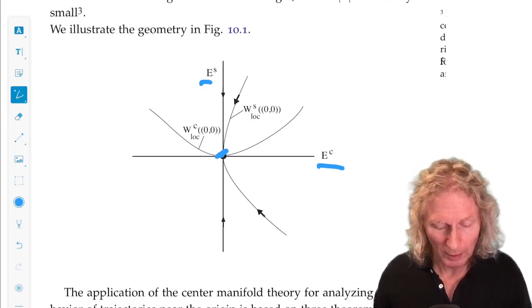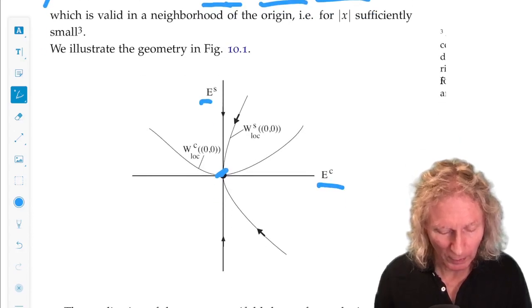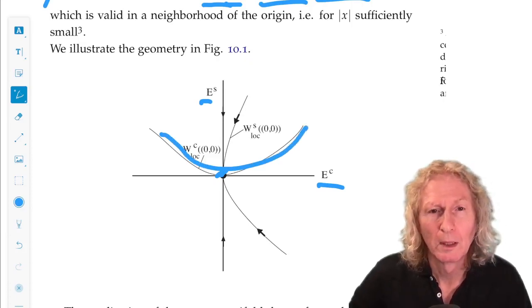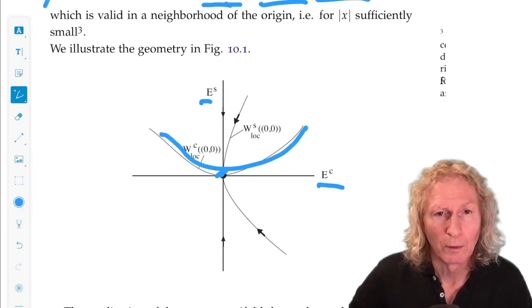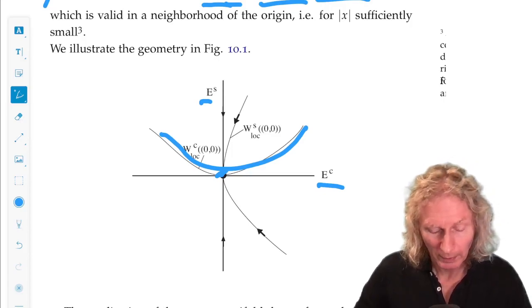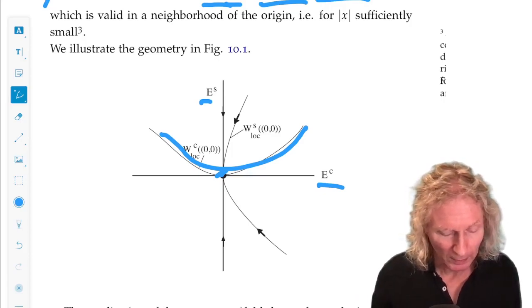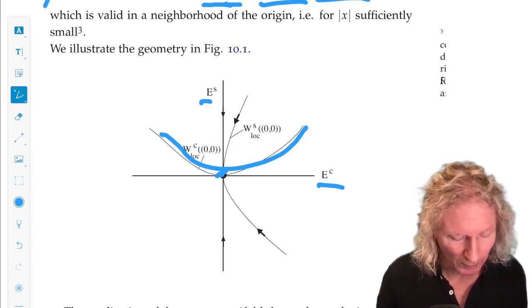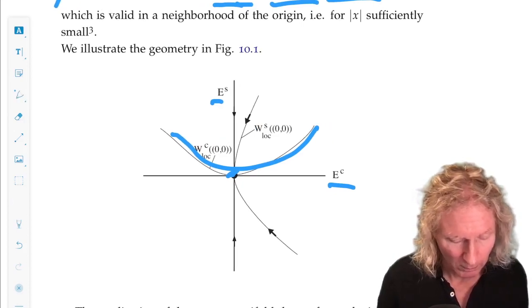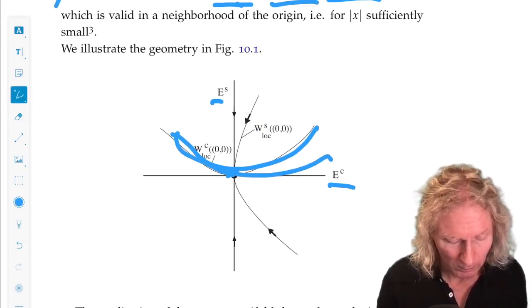And so the formula I just described above says there is a local manifold, the center manifold, that passes through the origin and it's tangent to the center subspace at the origin.